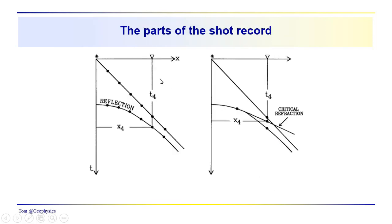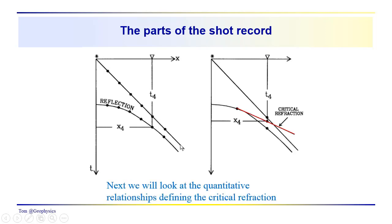The parts of the shot record are beginning to unfold. We've talked about the direct arrival and the reflection event, and noted that the reflection converges on the direct arrival asymptote. Next time, we're going to take a look at the critical refraction event. You've already learned a lot about the basic time-distance plot, and next time we'll begin examining the critical refraction in detail.